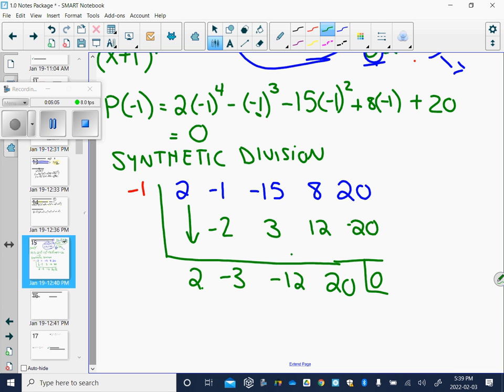Okay. So now, a factor, we have x plus 1. And then, we look at this. This is our constant. This would be our x term. This would be our x squared. And this would be our x cubed. So I have 2x cubed minus 3x squared minus 12x plus 20.